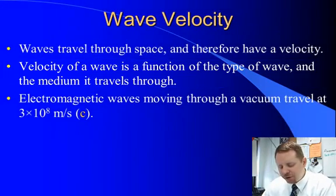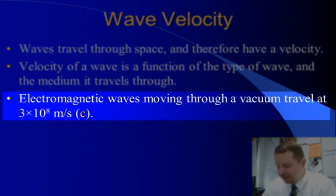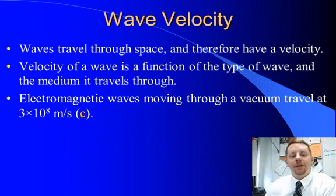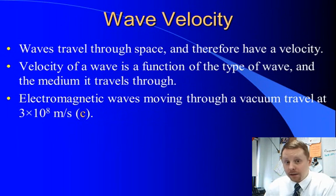For example, electromagnetic waves, things like light moving through a vacuum, travel at 3 times 10 to the 8 meters per second. That's such an important and common number in physics we use so often we give it a special abbreviation lowercase c. c is the speed of light or the speed of electromagnetic waves in a vacuum, 3 times 10 to the 8 meters per second. Really, really fast.